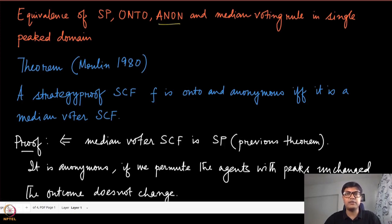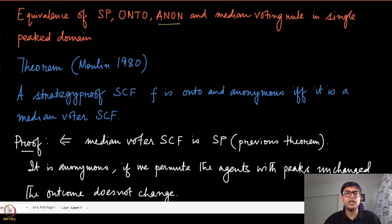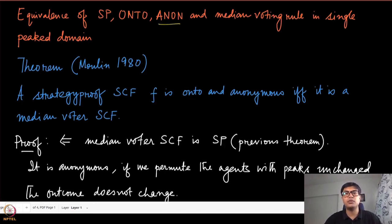This is significant because in the unrestricted domain — the Gibbard-Satterthwaite domain — even if you want to satisfy strategy-proofness and on-to-ness, the only mechanism you settle with is dictatorship. Clearly, the median voting rule is not a dictatorship. This is the power of the restricted domain. Once we focus only on single-peak domains, these three properties are uniquely characterized by the median voting rule. This result is due to Moulin 1980.